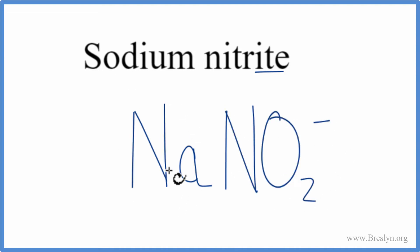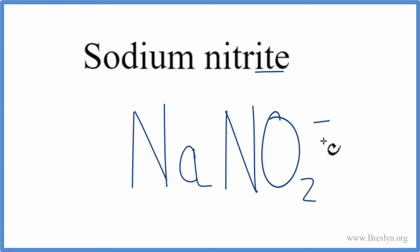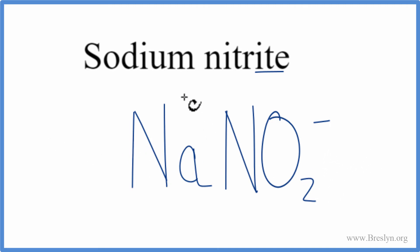Sodium is a metal, and the nitrite ion is a group of nonmetals, so this is an ionic compound. We need to consider the charges on the sodium and the nitrite when we write the formula. We want our net charge to be zero. Sodium in group 1 has a 1+ ionic charge, and nitrite is 1 minus.